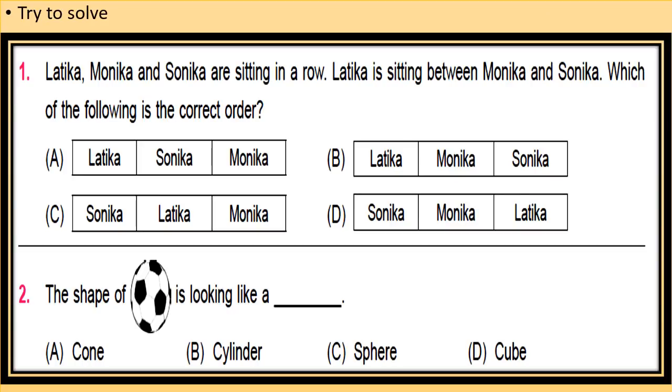See the picture. There are two questions in this picture. The first question is: Latika, Monica, and Sonika are sitting in a row. Latika is sitting between Monica and Sonika. Which of the following is the correct order? Now see the options carefully. Latika is sitting between Monica and Sonika, so choose the correct option.